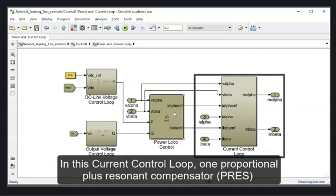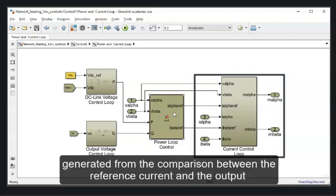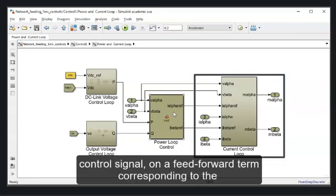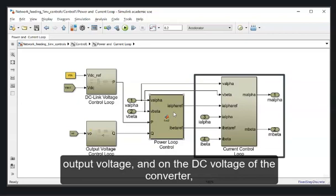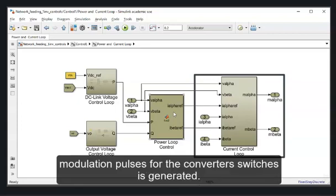In this current control loop, one proportional plus resonant compensator is applied to process and eliminate the error generated from the comparison between the reference current and the output current, producing a control signal. Based on this control signal, on a feed forward term corresponding to the output voltage and on the DC voltage of the converter, the modulating signal to drive the space vector modulation pulse for the converter switch is generated.